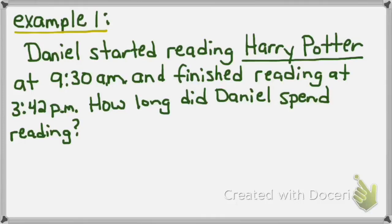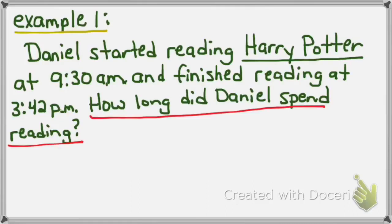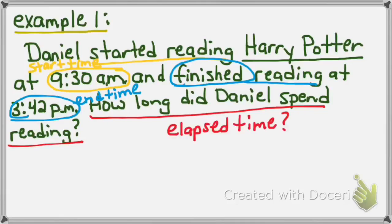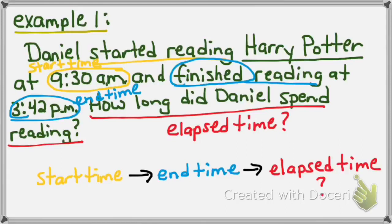Example number one: Daniel started reading Harry Potter at 9:30 a.m. and finished reading at 3:42 p.m. How long did Daniel spend reading? Going back to the question, I can see it asks how long Daniel spent reading. I know Daniel started reading at 9:30 a.m., so that's my start time. He finished at 3:42 p.m., so that's my end time. The amount of time spent doing something is the elapsed time, and that's what I need to figure out.